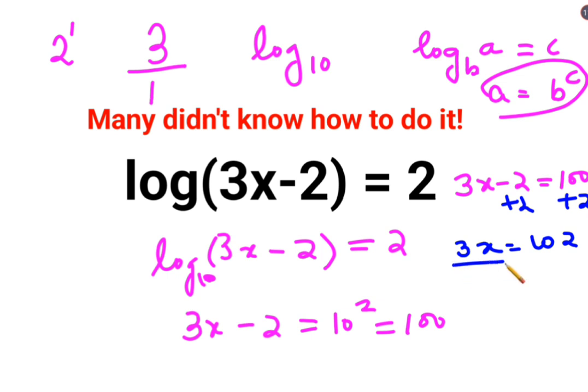Now, to find the value of x, you will divide both sides by 3. This is cancelling and you are left with x equals to 34.